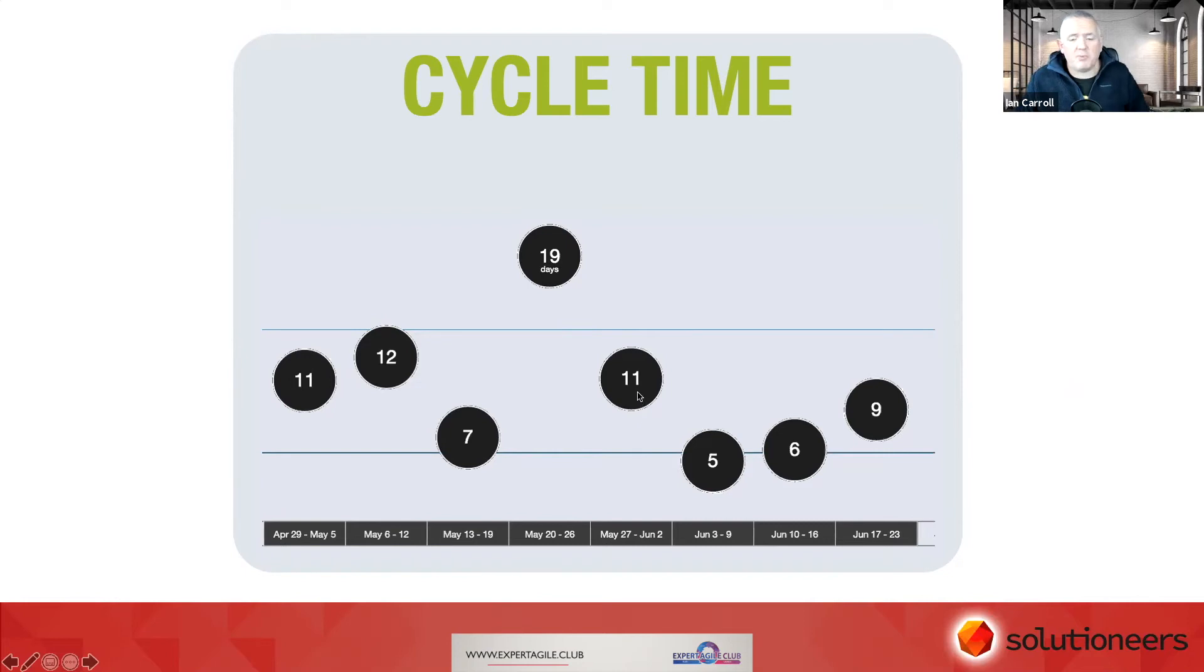This is a really predictable team because pretty much all of their work gets delivered across the board within 6 to 14 days. But of course, we've got an outlier here—something took 19 days rather than within the expected boundaries. So we're trying to understand the question: why did that take 19 days when the team should predictably deliver between 6 and 14 days for any items going across the board?